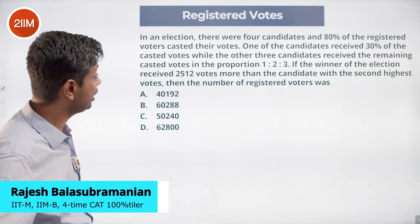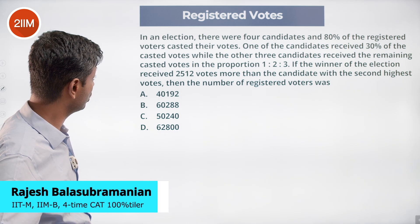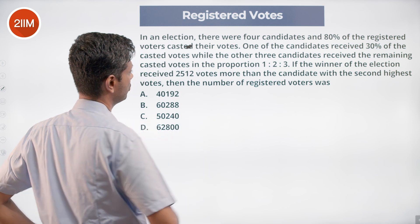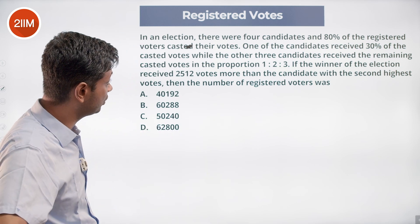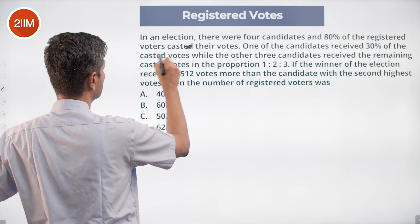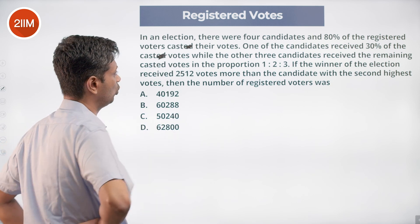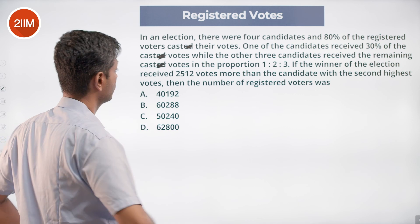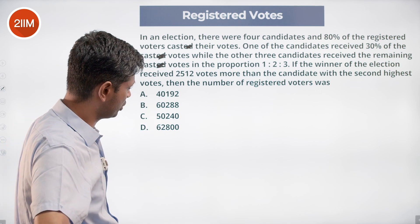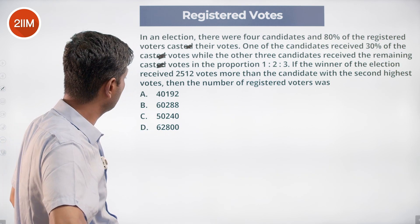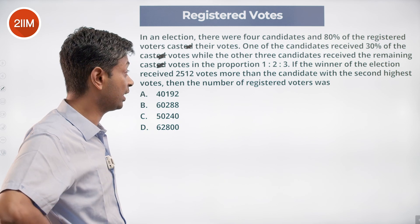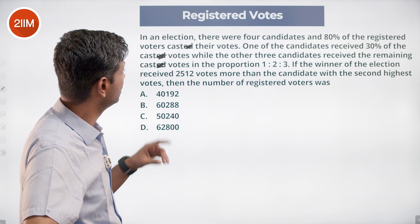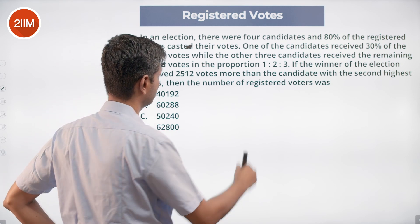In an election there were four candidates and 80% of the registered voters cast their votes. One of the candidates received 30% of the cast votes while the other three candidates received the remaining cast votes in the proportion 1 is to 2 is to 3. The winner of the election received 2512 votes more than the candidate with the second highest votes. Find the number of registered voters.